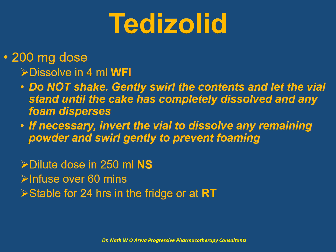For 200 mg doses, use 4 ml of water for injection — do not shake vigorously. Gently swirl the vial contents after adding the water, and allow to stand until the cake has completely dissolved. If necessary, invert gently or swirl until dissolution is complete. The prescribed dose should then be further diluted in 250 ml of normal saline, infused over an hour, and such solutions remain stable in the fridge or at room temperature for one day.